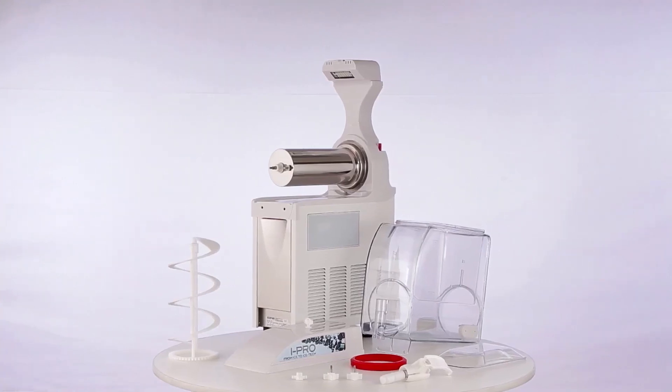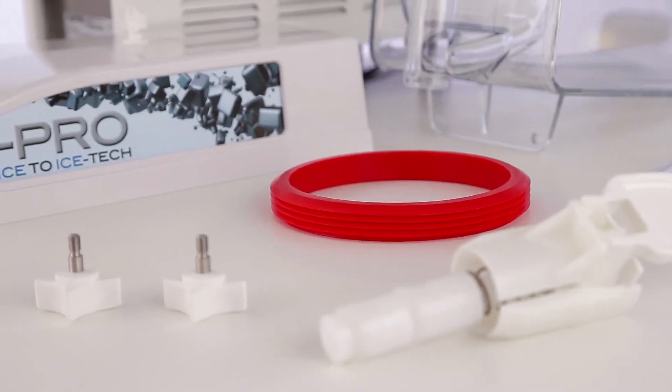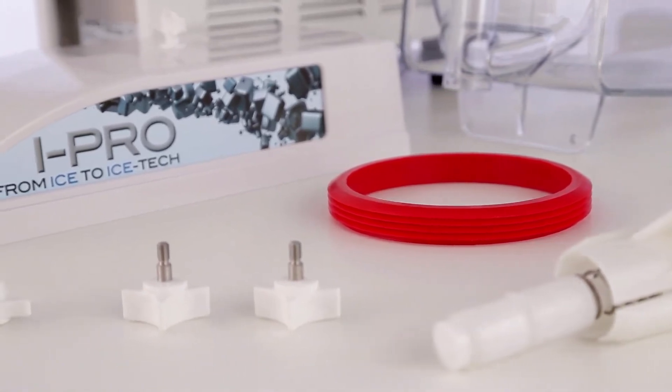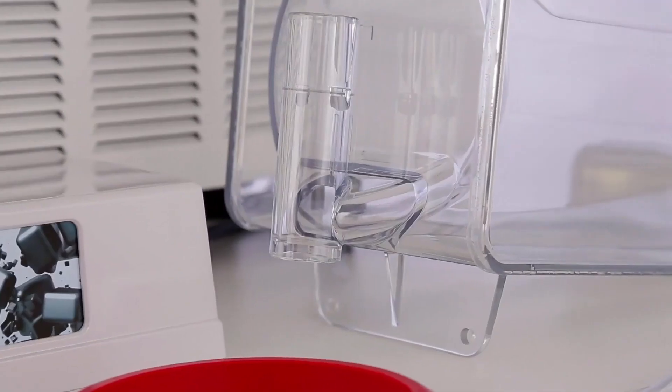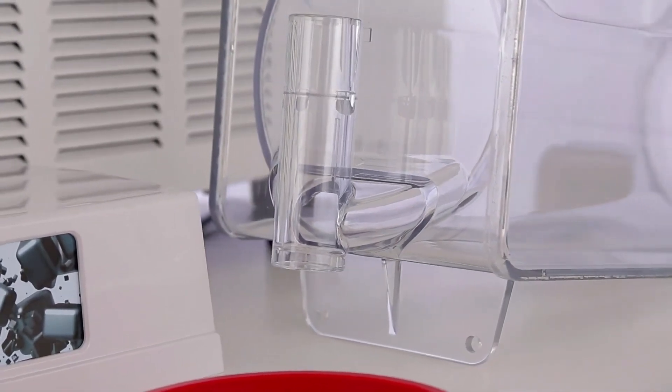Thoroughly wash all the removed components with hot water and mild dishwashing detergent. Thoroughly wash the surfaces of the machine and then the machine is ready to be reassembled.